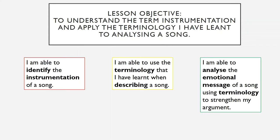Once you're able to do that, in the yellow box in the middle, you are able to use the terminology that you have learnt when describing a song. The terminology you've learnt includes things like dynamics, pitch, melody — all these different things we've been looking over in the past few weeks — and you're able to apply that to describing a song. Once you're able to do that, in the green box on the right, you are able to analyse the emotional message of a song using terminology to strengthen your argument, thinking critically about what emotional effect and emotional message this has.